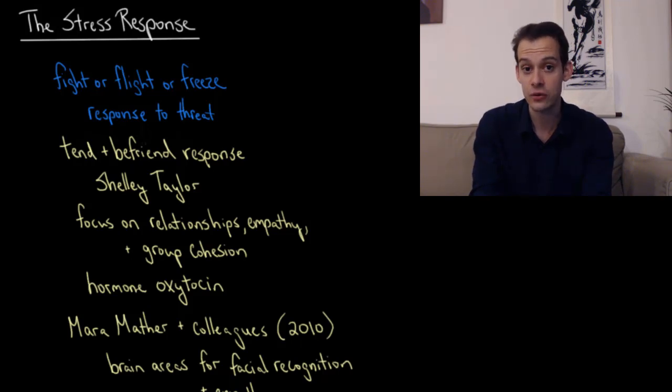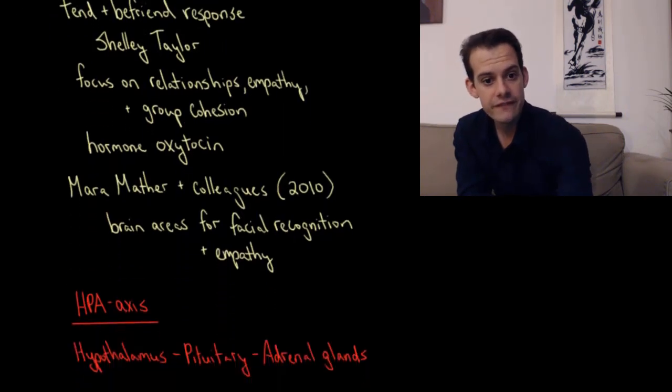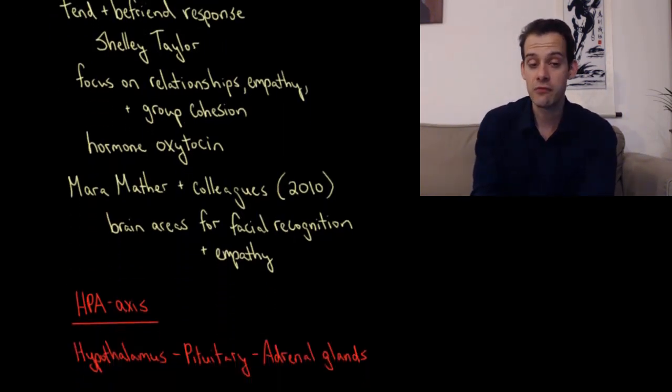And this may have something to do with greater release of the hormone oxytocin in females compared to males in response to threats. And some research by Mara Mather and colleagues in 2010 found that females showed greater activation of brain areas associated with facial recognition and empathy in response to threats.